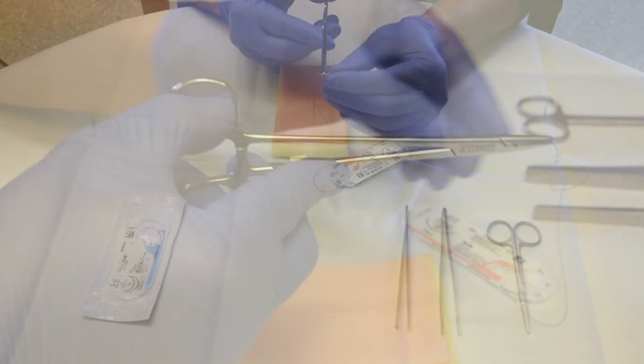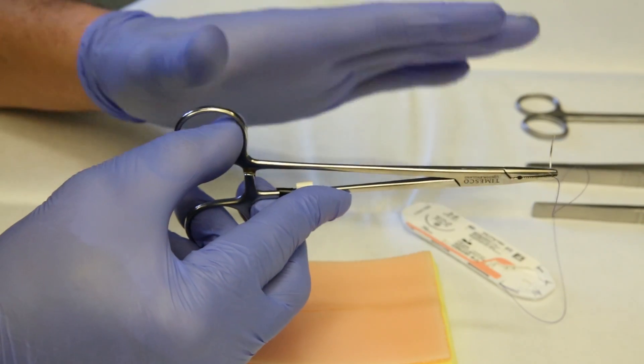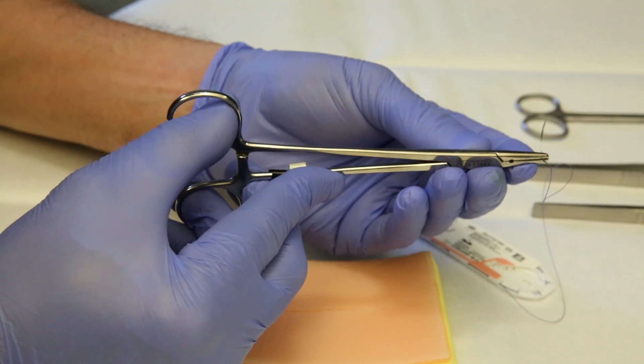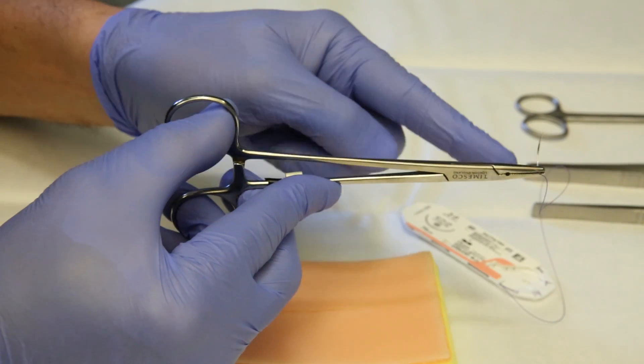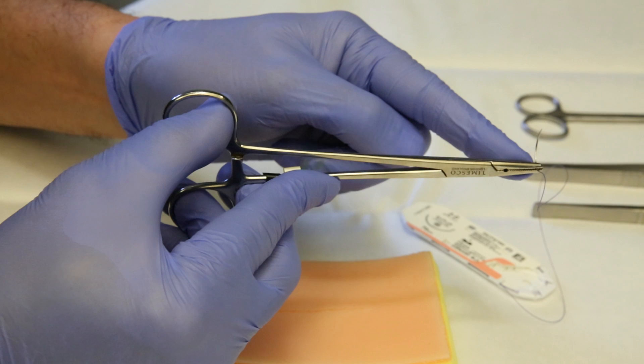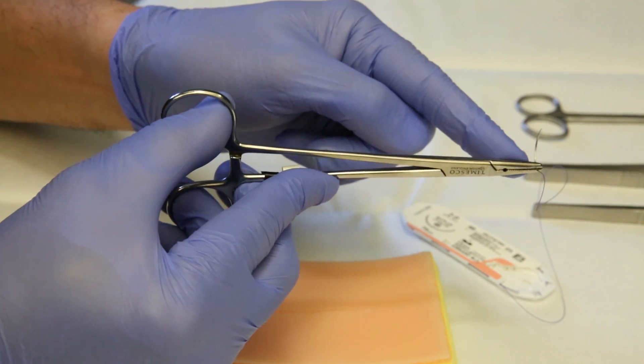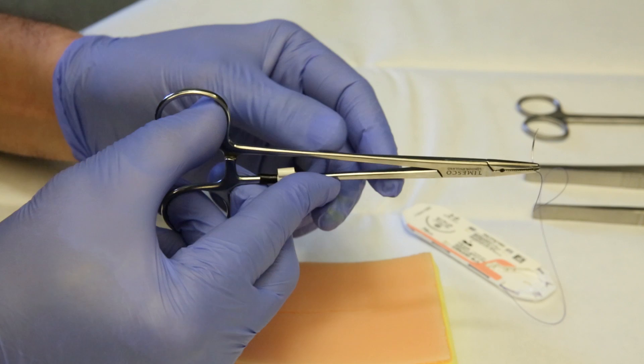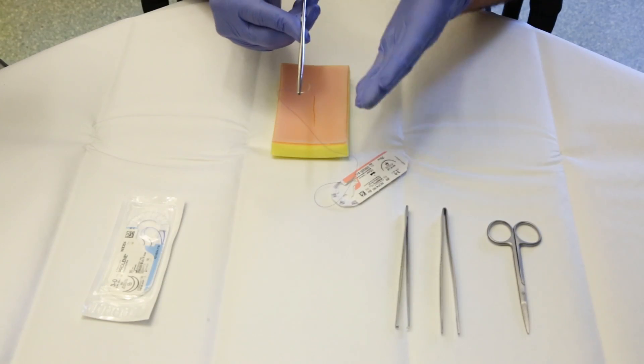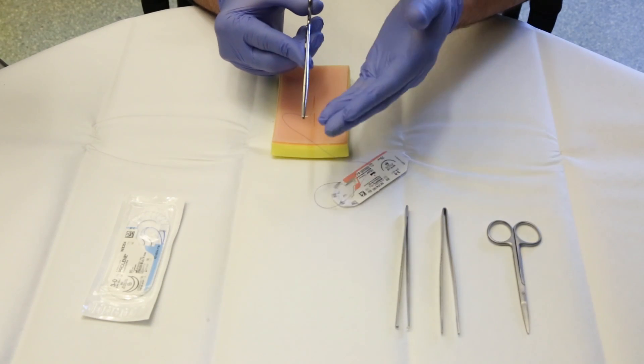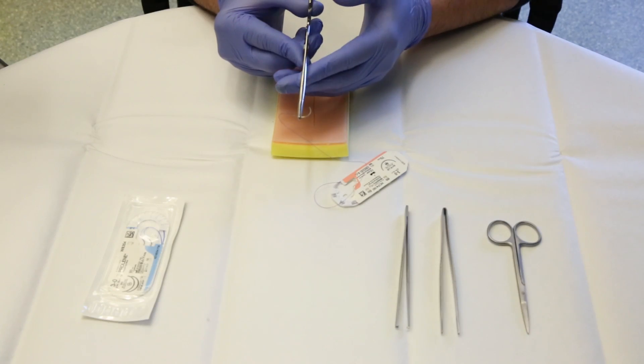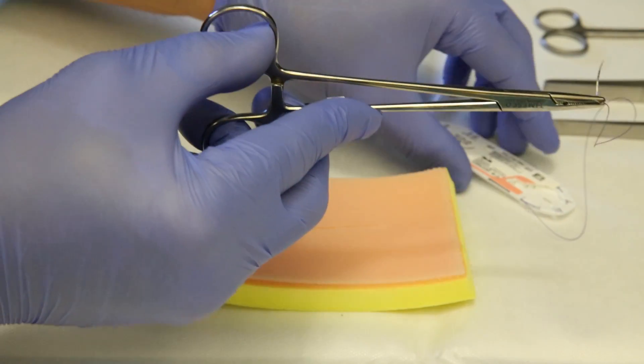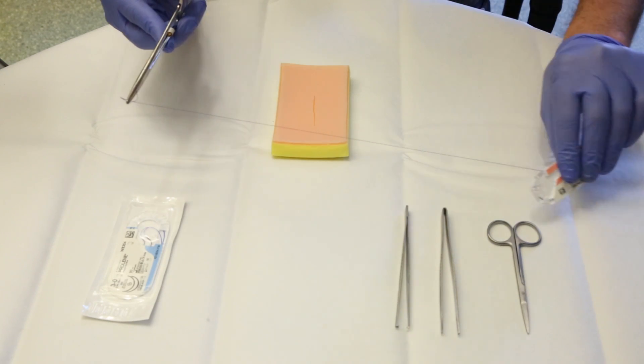As you see here, the needle has to be on the tip of the needle holder and about a third or quarter from the end of the needle. And it has to be facing you, smiling in front of you. This is the right way to hold the needle holder. Not this way, not this way. So this is the right way. Now we take all the thread out.